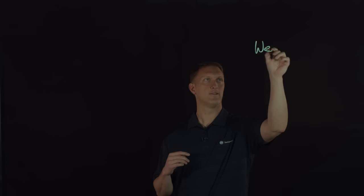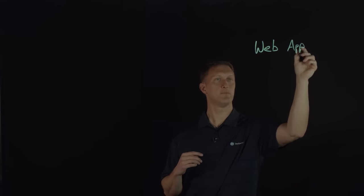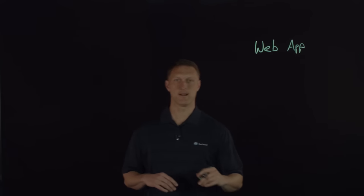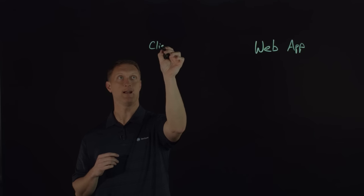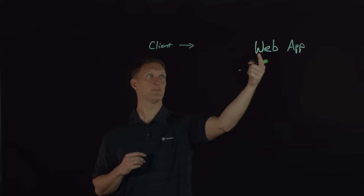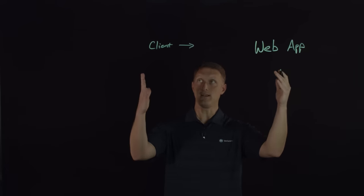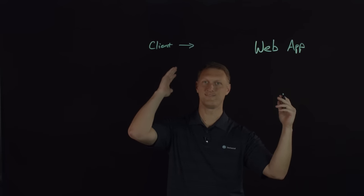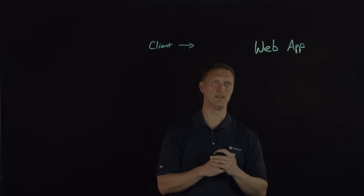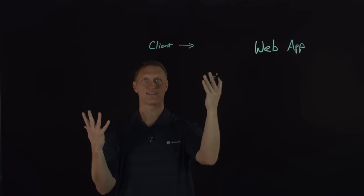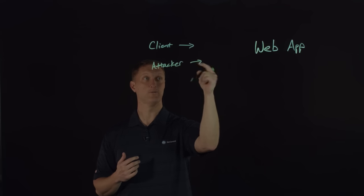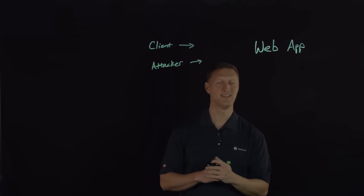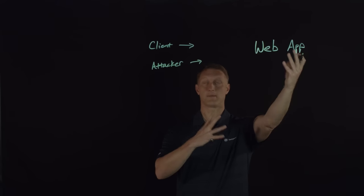Let's say you have your awesome web application over here — here's your web app that everybody comes and visits and it does all kinds of great stuff. That's what you want to protect. You have clients or users out here that want to access your web application, and that's great if you had nothing but safe clients. The problem is not all clients are great. Some are attacker bad guys. So let's say you have an attacker that wants to visit your web application for less than positive reasons. The question is, how do you protect your web application against these attacks?